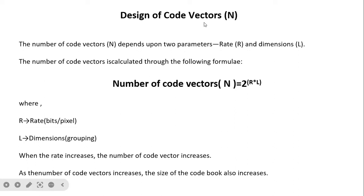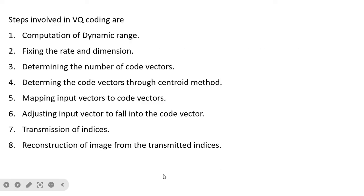The code book is a set of code vectors. The number of code vectors depends on two parameters: rate r and dimension l. The formula is: number of code vectors = 2 raised to r times l, where r is the rate in bits per pixel and l is the dimension (grouping size). When the rate increases, the number of code vectors increases, and as the number of code vectors increases, the size of the code book also increases.